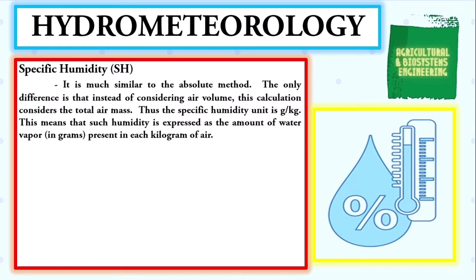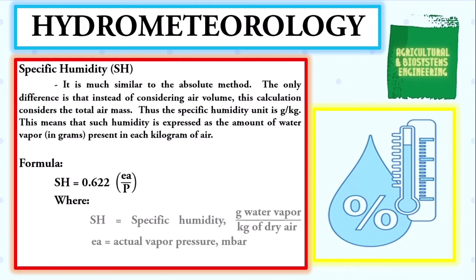Next, specific humidity, represented by SH. It is similar to absolute humidity, but instead of considering air volume, this calculation considers the total air mass. Thus, specific humidity is expressed in grams per kilogram — the amount of water vapor in grams present in each kilogram of air. The formula is: SH = 0.622 × ea / P, where ea is the actual vapor pressure in millibars and P is the atmospheric pressure, which has a value of 843 millibars.